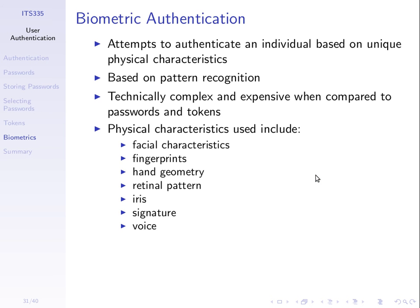The next few slides show some of the trade-offs between the different physical characteristics, including this issue that the match is not exact. Compared to passwords and tokens, biometrics usually require much more complex techniques, usually require some special hardware such as a camera or fingerprint reader, so they're more expensive to set up. In some cases they can be quite accurate, but in some cases their accuracy can cause issues — they cannot authenticate the person correctly.